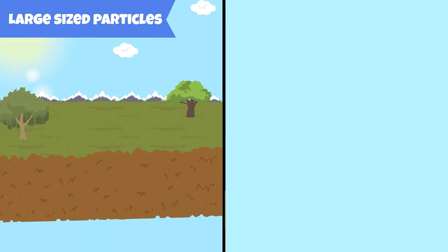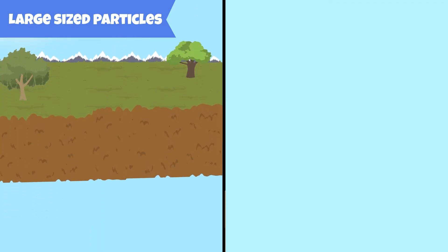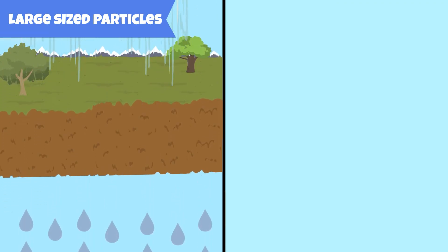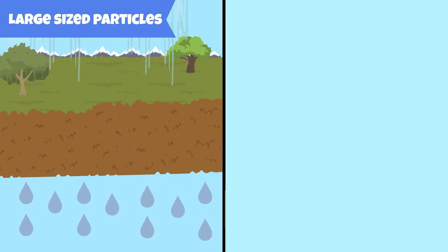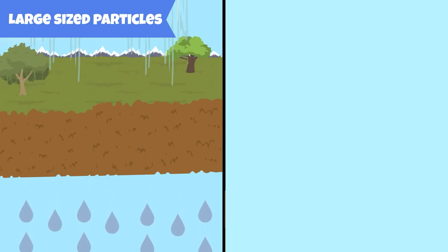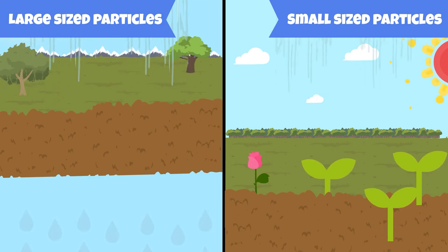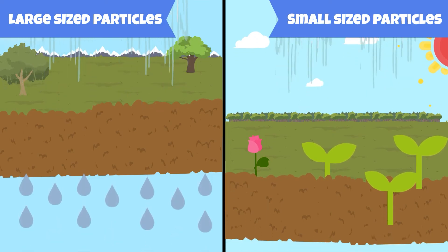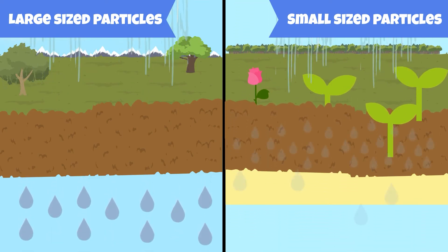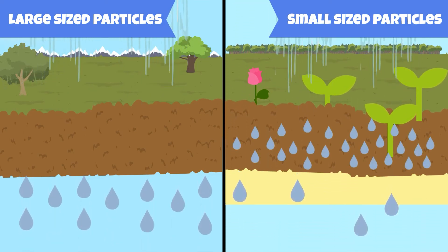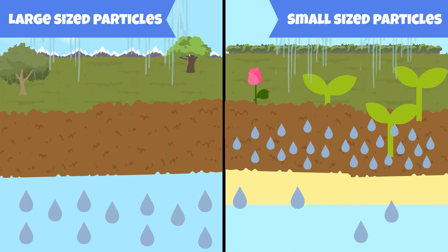Large-sized particles allow for water to flow through them easily and retain very little or no water. While soil that contains small-sized particles has a larger surface area that resists the flow of water and allows for it to be retained.